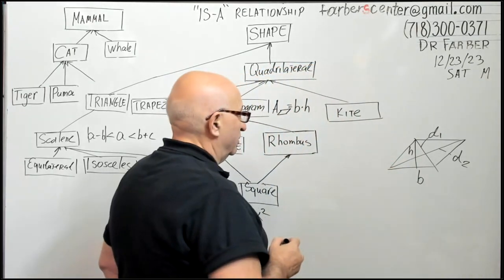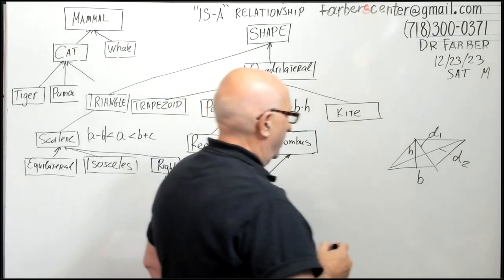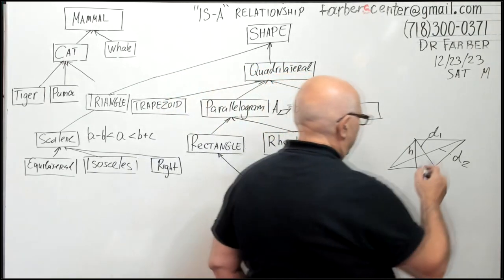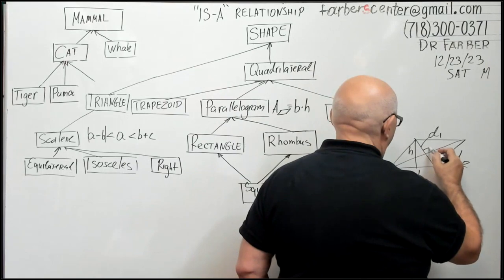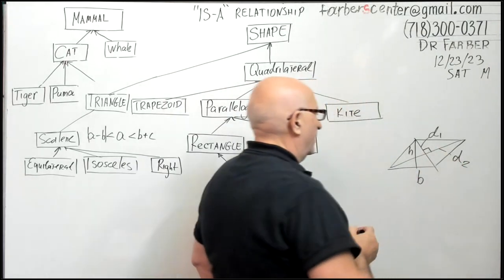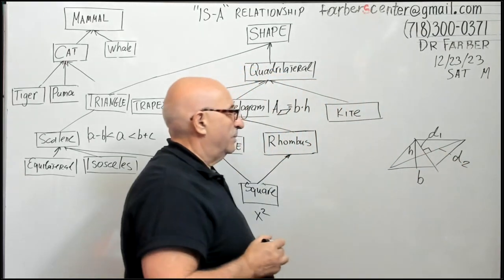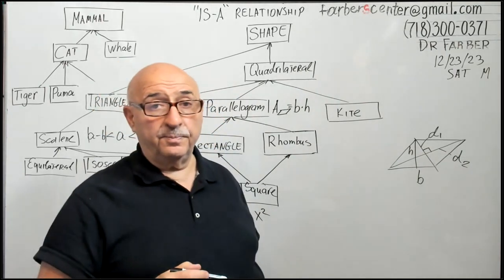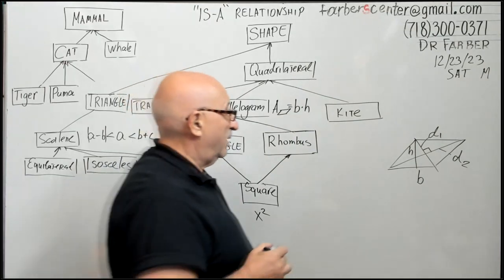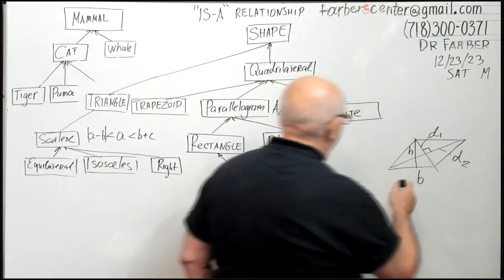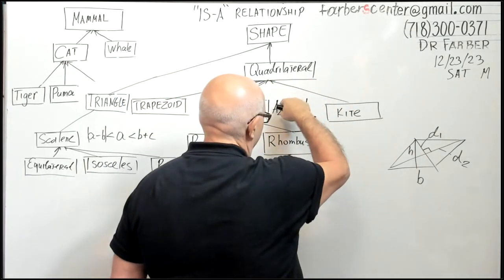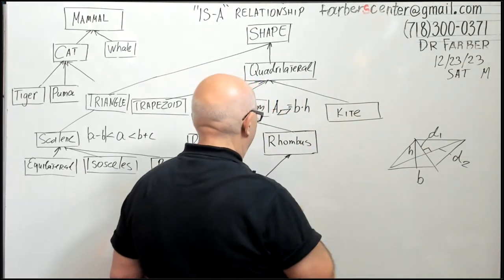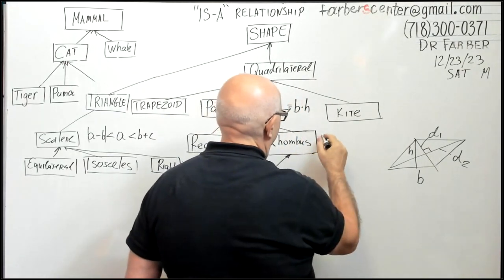Only in rhombus we have a property that diagonals of rhombus are mutually perpendicular. That's why for rhombus it has all features of parent, plus another one, the same formula base times height, plus another formula because he has his own feature as a child.